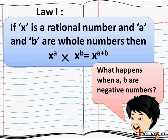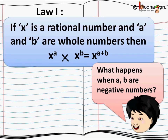This was Law 1: if x is a rational number and a and b — the powers — are whole numbers, then x to the power a multiplied by x to the power b equals x to the power a plus b. This means you simply add the powers when the bases are the same.